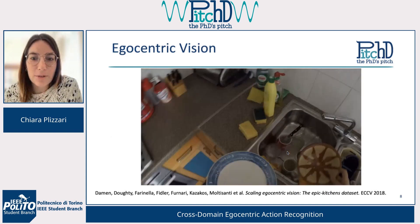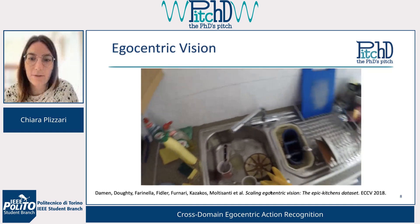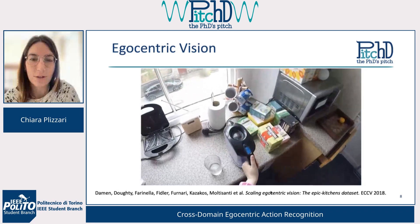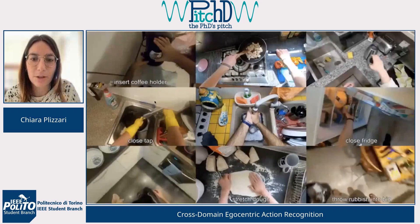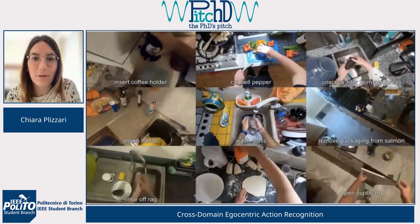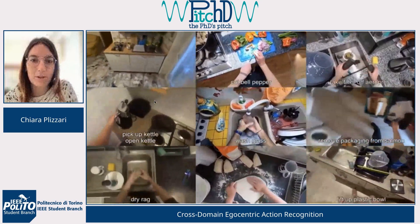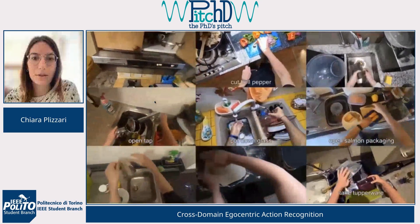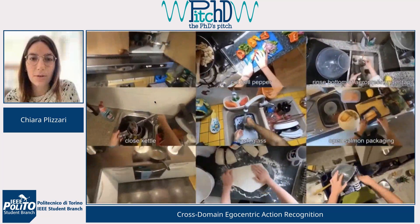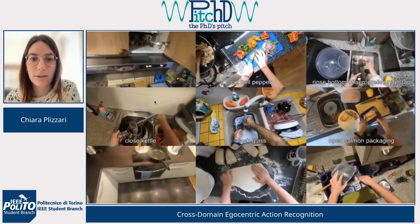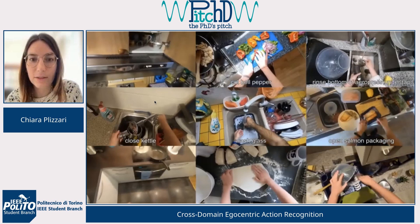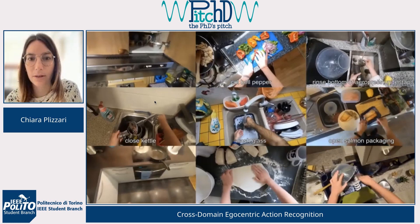First of all, I will show you this video of a dataset from an egocentric footage. You can see the person is moving around the kitchen. The camera in egocentric vision is mounted on the head of the wearer, who is recording their activities. You can see different activities such as cutting bell pepper or washing glass. The characteristics of egocentric vision is that you can visualize all the objects the user is interacting with, allowing us to study many fields such as skill understanding or recognizing the procedures the user is taking.